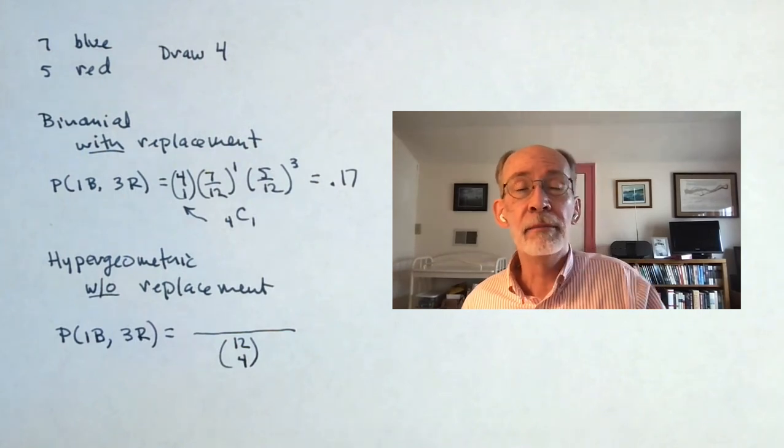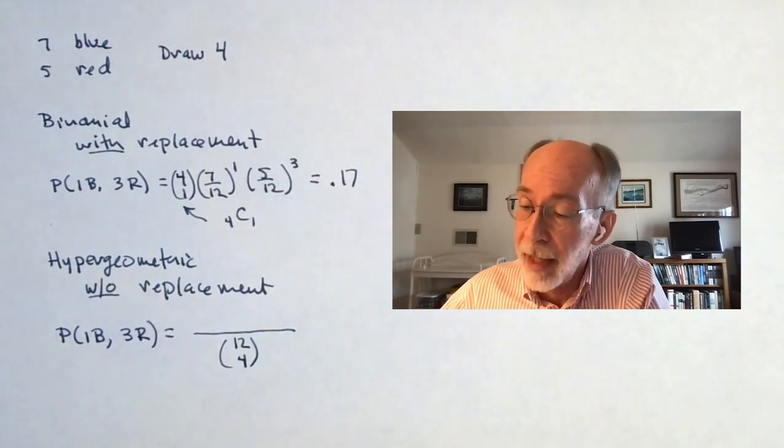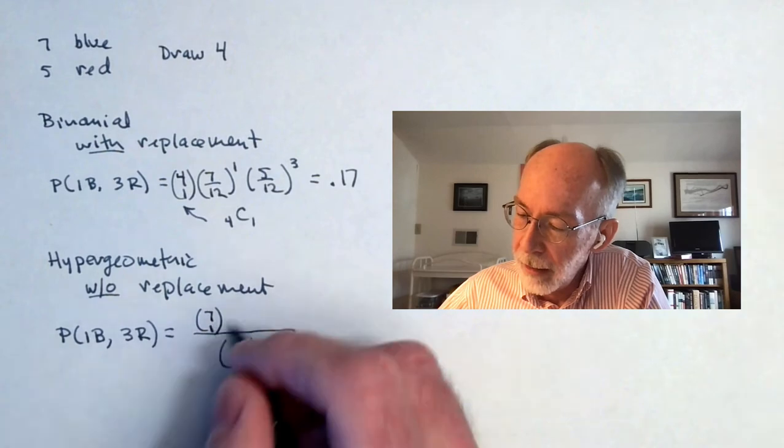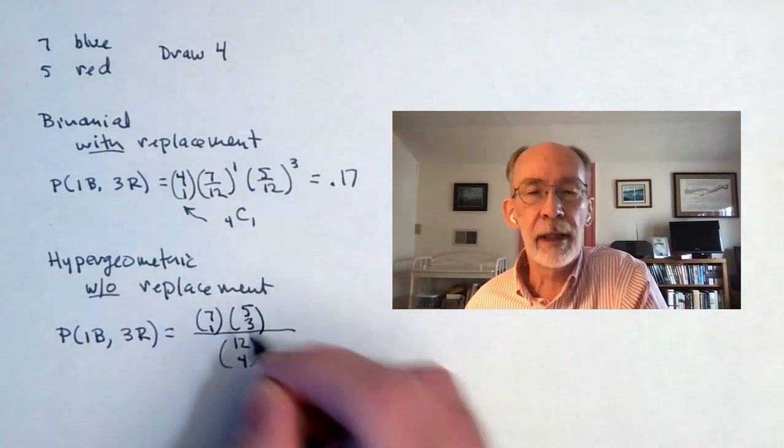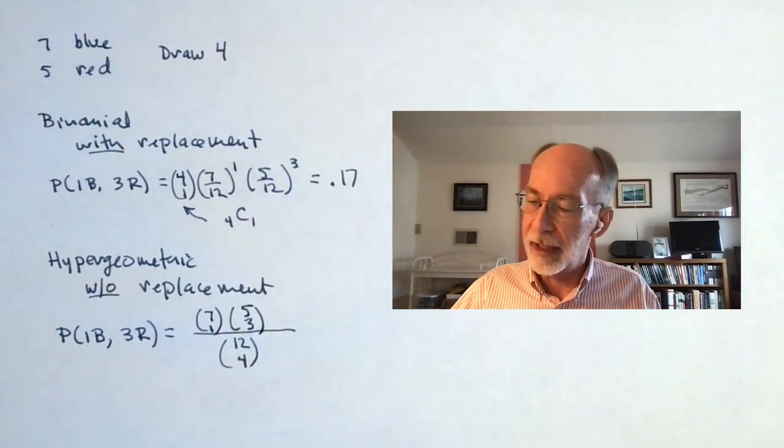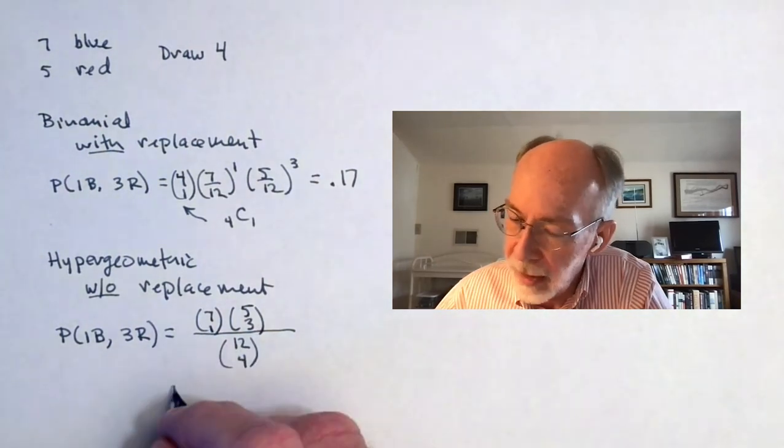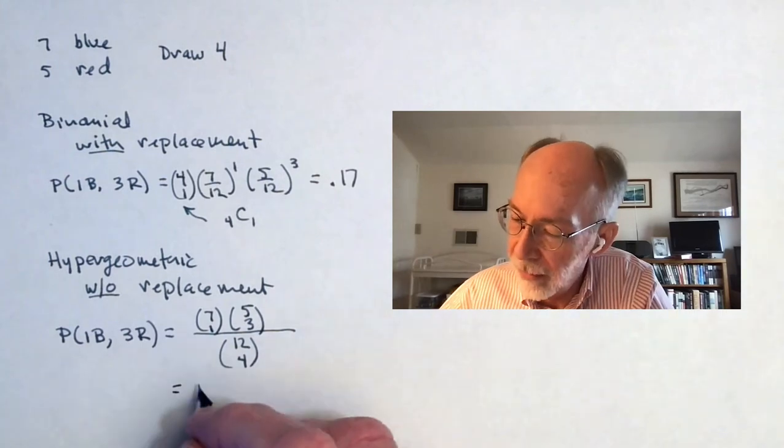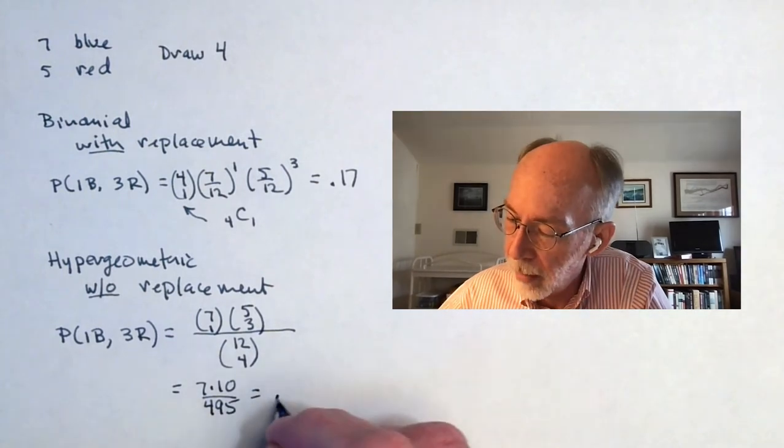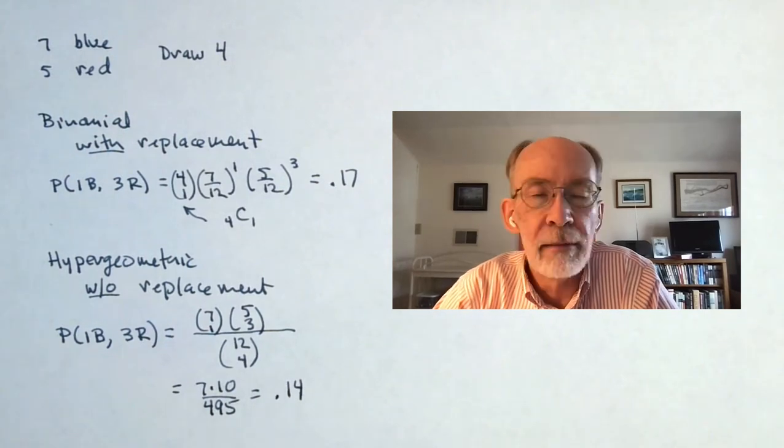The numerator is going to be the number of ways I can get one of them to be blue and three of them to be red. Well, there are seven blues and I'm imagining that I'm going to get one of them. There are five reds and I'm imagining that I'm going to get three of them. And so the total number of ways that I can get one blue and three reds ought to be the number of ways I can get a blue times the number of ways I can get three reds. If we do the arithmetic, this is seven times 10 divided by 495, which is about 0.14. Not stunningly different to the binomial, to the with replacement case, but not identical either.